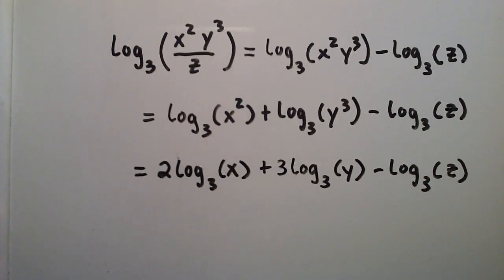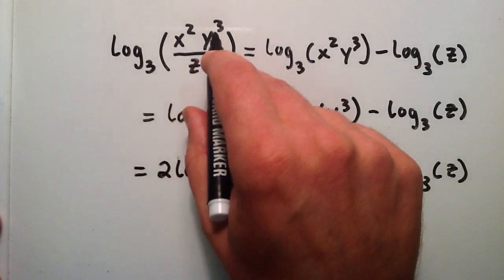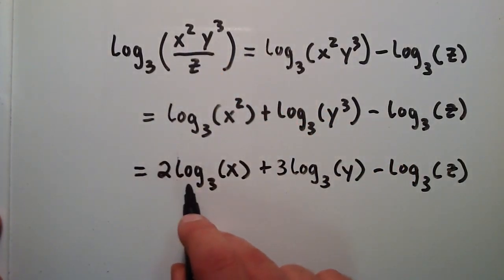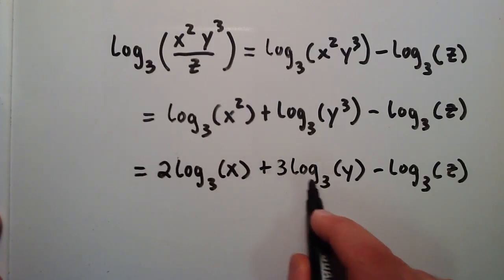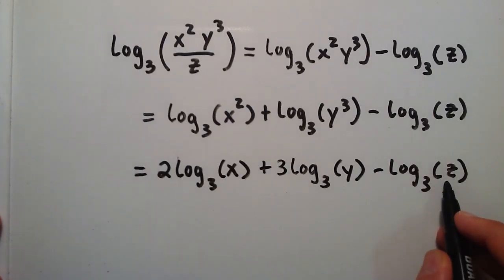So by using properties of logarithms that I've explained in my previous videos, we found that log base 3 of x squared y to the third divided by z is equivalent to 2 times the log base 3 of x plus 3 times the log base 3 of y minus the log base 3 of z.